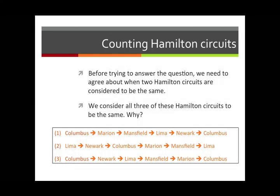Likewise, comparing circuits one and three: circuit three is circuit one read backwards. Circuit one goes Columbus, Marion, Mansfield, Lima, Newark, Columbus. Read it backwards: Columbus, Newark, Lima, Mansfield, Marion, Columbus — exactly the same as circuit three. So circuit three is circuit one done backwards, and we also consider those two to be the same. Anytime two Hamilton circuits differ only by the choice of starting point, or differ only in direction — forwards versus backwards — we consider them to be the same.